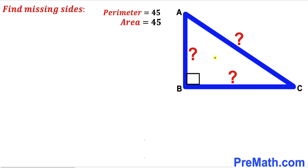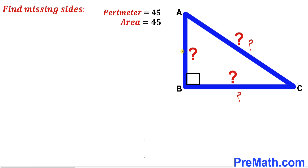Welcome to PreMath. In this video we have a right triangle ABC, where the perimeter of this triangle has been given to us as 45 units and likewise the area of this triangle has been given to us as 45 square units as well. Our task is to find the value of all the missing side lengths.